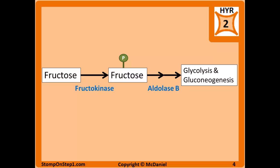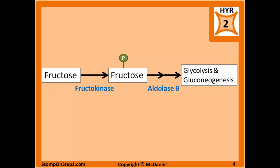Fructose is a sugar similar to glucose that we consume in our diets, and it can be used to create energy or create glucose by a specific pathway. The first step is converting fructose into fructose 1-phosphate, and then the fructose 1-phosphate is acted on by aldolase B. Then through a few more steps, that sugar can be used in glycolysis or gluconeogenesis to either make more glucose or create energy.